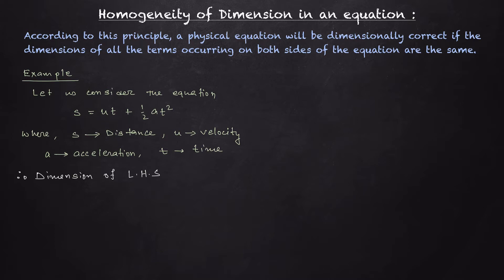If s, ut, and ½at² all have the same dimensions, then we can say this equation is dimensionally correct. Let's consider the dimension of the left-hand side. This is a single quantity s, and s represents length, so its dimension will be L only.